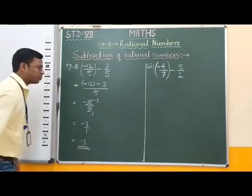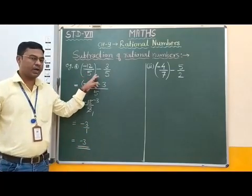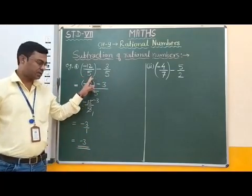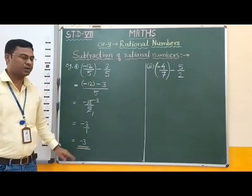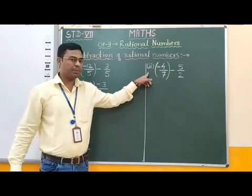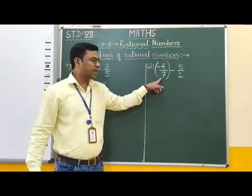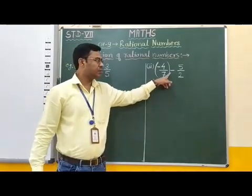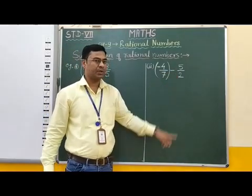Therefore students, the subtraction of these two rational numbers is equal to minus 3. Now take the next example: minus 4 by 7, minus 5 by 2.